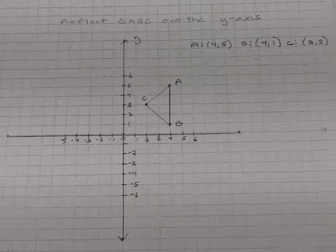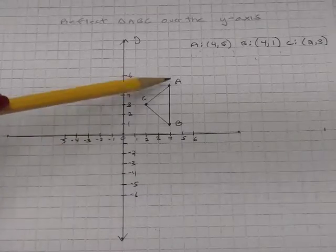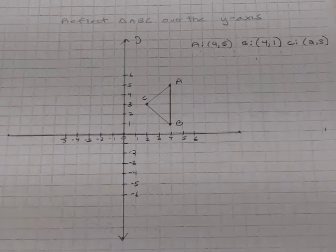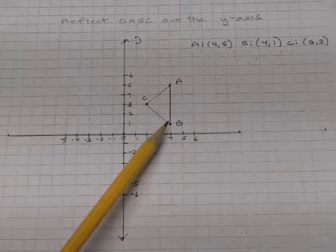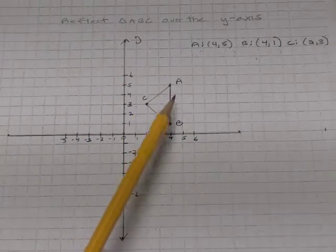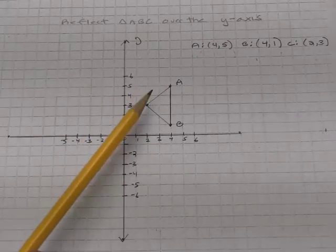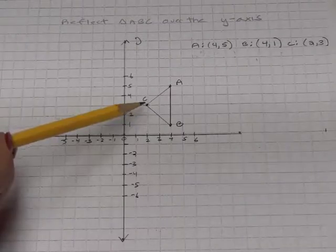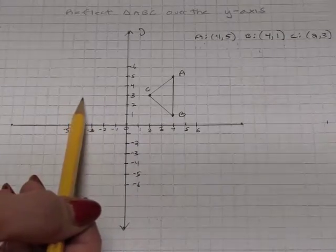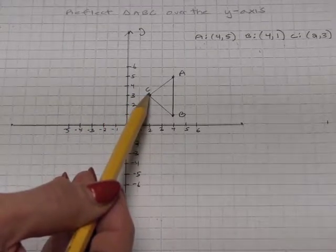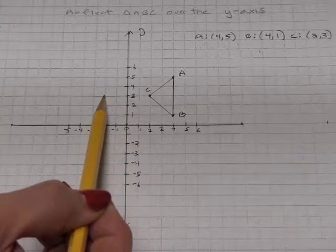The first isometry we're looking at is a reflection. This is a reflection of triangle ABC over the Y-axis. A reflection takes a figure and produces a mirror image, as if you had picked it up and flipped it over the line of reflection. Each point will be the same distance away from the Y-axis on the other side. So C is two units to the right of the Y-axis, and C prime will be two units to the left.